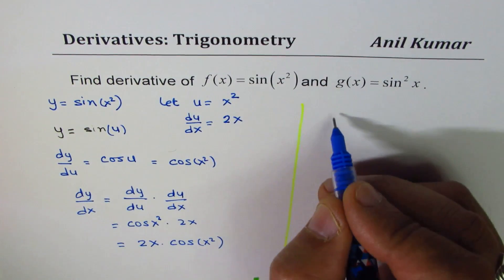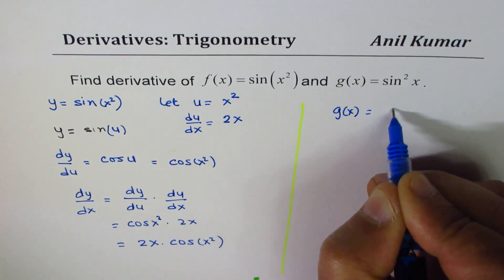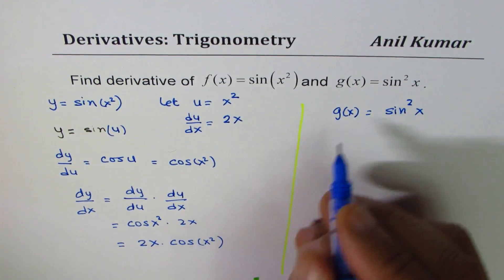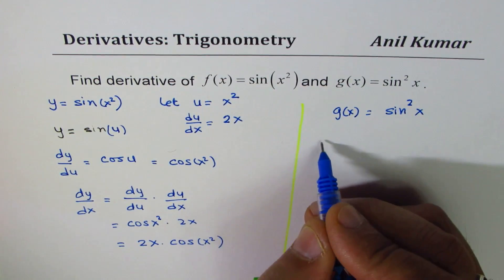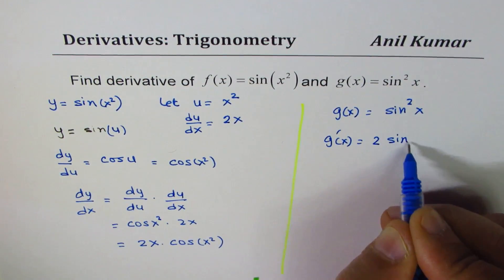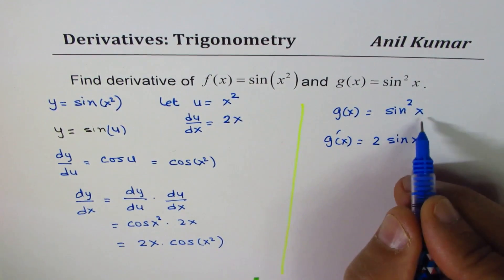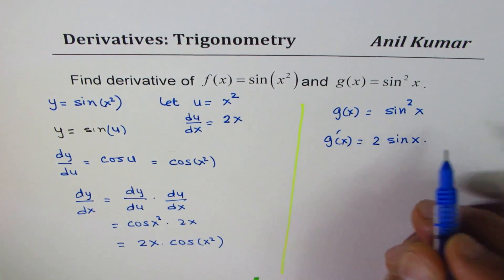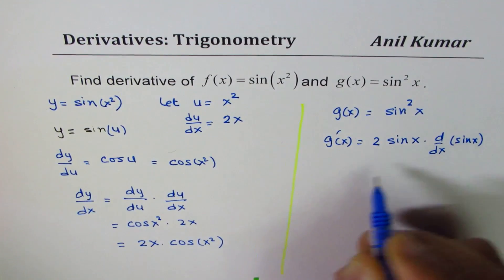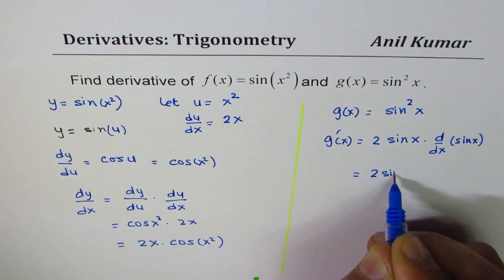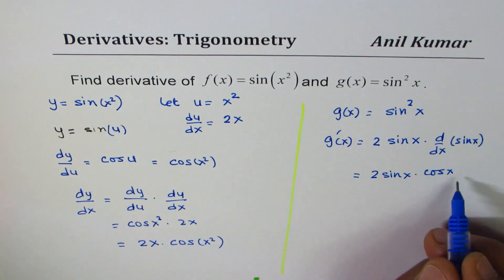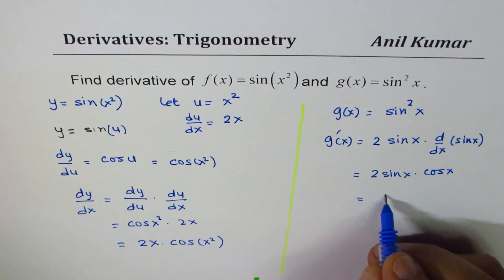Now for the second function, g(x) = sin²(x). You can apply the power rule straight away here. The derivative of g(x) is 2·sin(x) times the derivative of the inside function, which is sin(x). So that gives us 2·sin(x)·cos(x). Some of you could also write this as sin(2x).